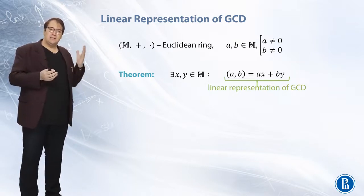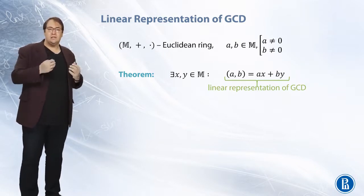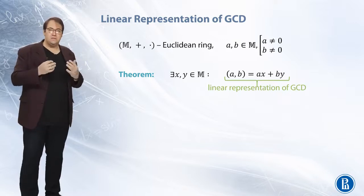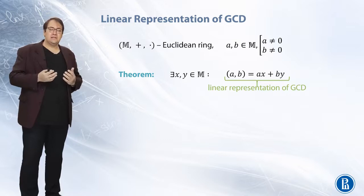Namely, the greatest common divisor is equal to ax plus by where x and y are some elements of M. So the theorem states that these elements exist.